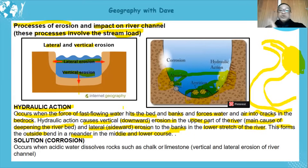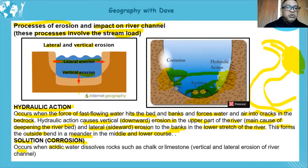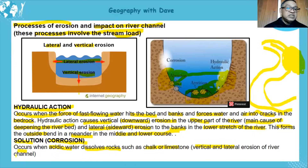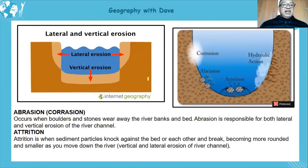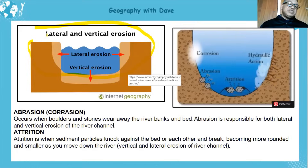Next, solution or corrosion occurs when acidic water dissolves rocks such as chalk and limestone, causing vertical and lateral erosion of the river channel. As this acidic water dissolves the rock it contributes to the river load, and by dissolving the rock it widens and deepens the valley.